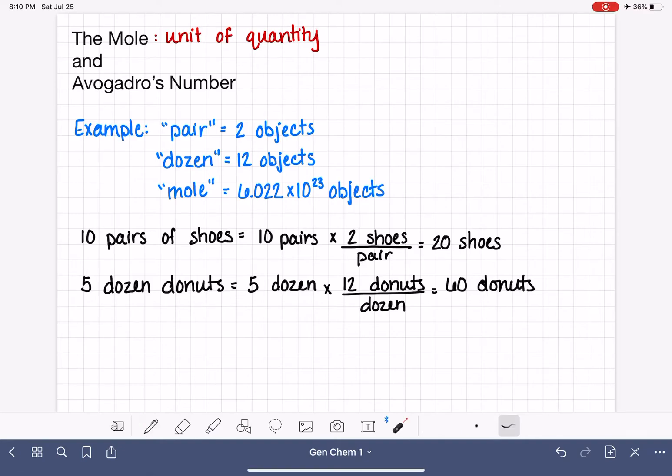And again, you might still be saying, I don't understand why we have to make this so complicated, because everybody knows it's just going to be five times 12. That's how many donuts we have. Well, now let's take it into something that's more related to chemistry. So let's say that we have six moles of gold atoms. And we want to know how many atoms there are in six moles.